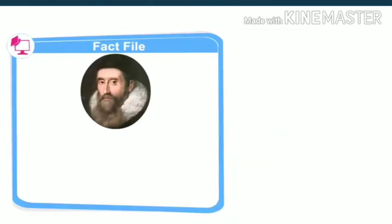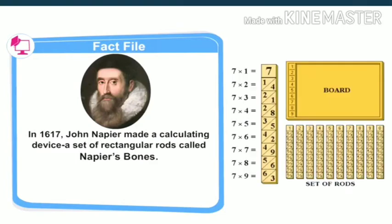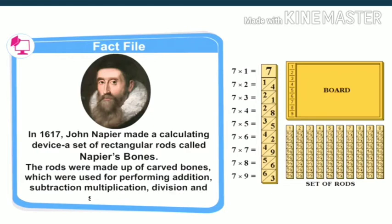Let me share an interesting fact with you. In 1617, John Napier made a calculating device — a set of rectangular rods called Napier's Bones. The rods were made up of carved bones which were used for performing addition, subtraction, multiplication, division and square roots.